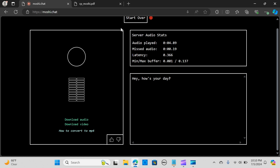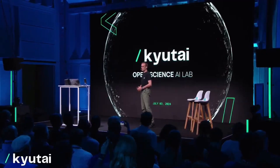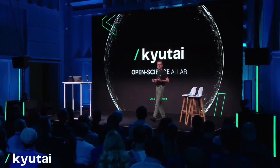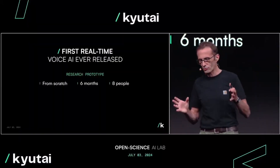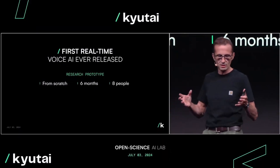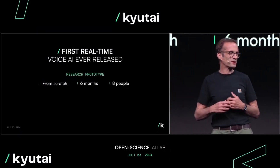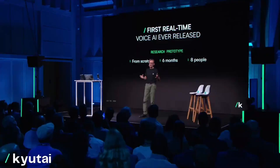Welcome everyone, thanks for joining us live in Paris. Kyutai is a very unique place — it's a non-profit lab dedicated to open research on artificial intelligence. We work on novel foundation models and plan to share them for the benefit of all, which is a very important mission to us. Within six months from scratch, we developed this research prototype, which is really an experience.